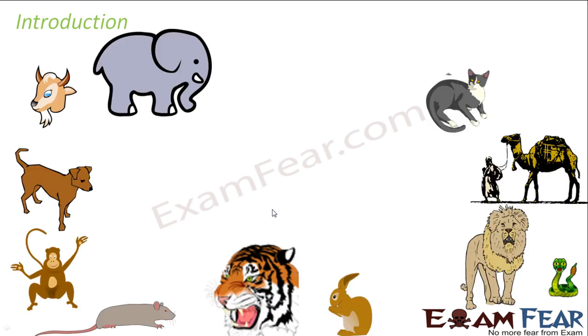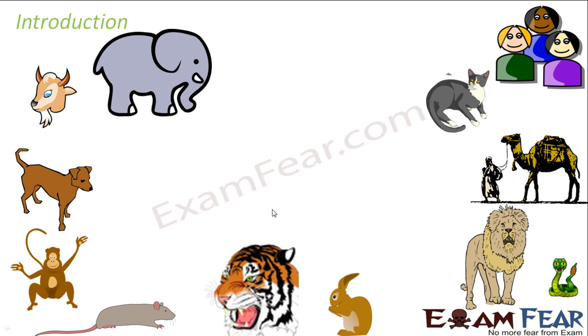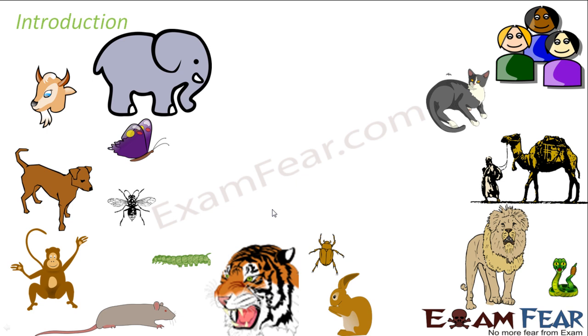So diversity in living world — we are going to talk about the variety of life forms that we see around us. There are so many living organisms around us. If you visited a zoo, you would have seen many different varieties of wild animals. Some animals we see quite often, like cats, dogs, goats, rabbits, but there are animals like elephants, lions, tigers or camels which you only get to see in forests or wildlife sanctuaries.